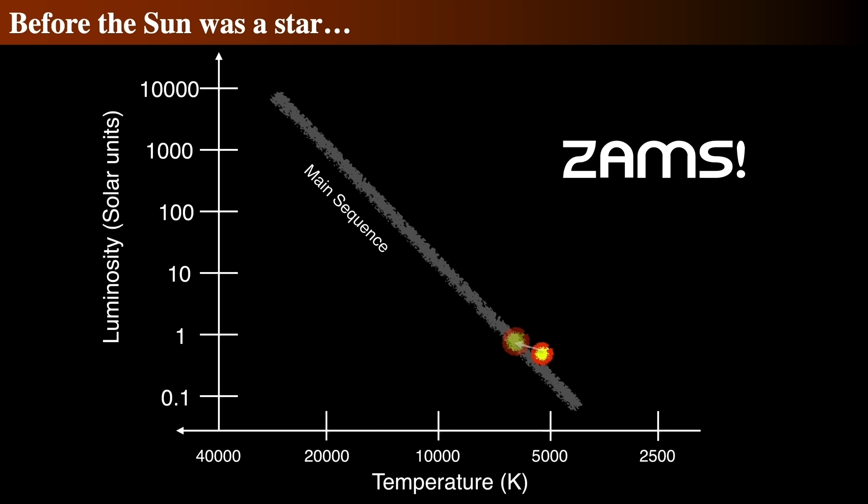This is the ZAMS, or Zero Age Main Sequence, when the Sun first alit onto the main sequence and started burning hydrogen in its core. At this time, it was very different than we see today. It was a little fainter at about 70% of the solar luminosity, it was a little smaller at roughly nine-tenths of a solar radius, and a little cooler at 5580 Kelvin rather than 5800 Kelvin. At this point, the Zero Age Main Sequence, when hydrogen initiation occurred, the Sun came to thermal and hydrostatic equilibrium.